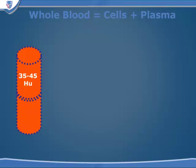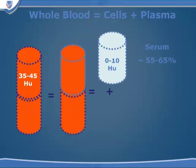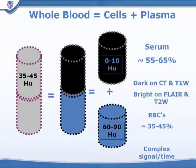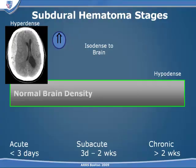What accounts for the attenuation or density we see on CT of blood in the subdural space? Whole blood is about 35 to 45% red cells and is about 35 to 45 Hounsfield units. But when blood stops moving, it forms a clot, and the serum — which is mostly water — separates from the red cell mass. The red cell mass, once separated from the fluid component, will have a much higher attenuation in the range of 60 to 90 Hounsfield units, and that's the density we see on CT. So the acute subdural hematoma will be hyperdense or hyperattenuating.